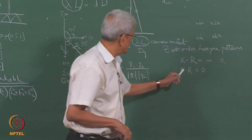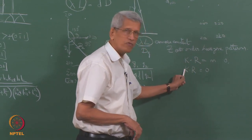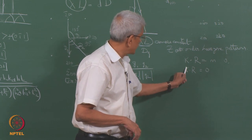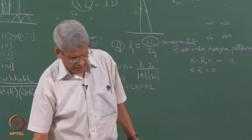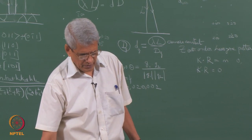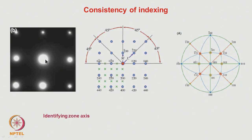In a diffraction pattern, when we identify the indexed vectors G1 and G2, taking G1 × G2 gives the beam direction [uvw]. This is the zone axis. The reason this works is that since the wavelength of radiation is extremely small in electron diffraction, the Bragg angle θ is very small — less than 1 degree — so almost all planes nearly parallel to the beam direction are the ones giving rise to diffraction.